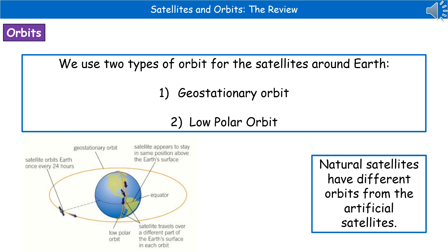Our geostationary orbit is that big circle going around the whole Earth. The whole idea about that one is that the satellite appears to be in the same position above the Earth's surface, no matter when you look at it. Whereas the low polar orbit, which wraps very close around the surface of the Earth in the diagram, travels over different parts of the Earth's surface in each orbit.